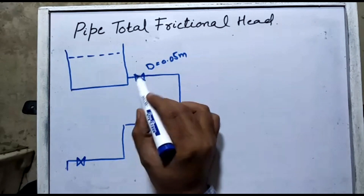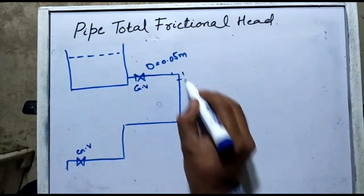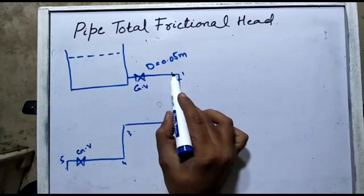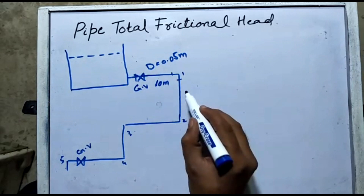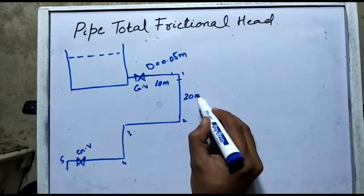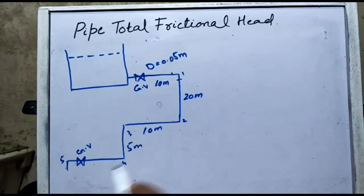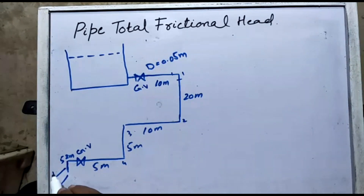In the pipe system there are two gate valves and five elbows. The pipe lengths are: 10 m, 20 m, 10 m, 5 m, 5 m, 5 m, 5 m, then 2 m after the valve, and 1 m at the end.